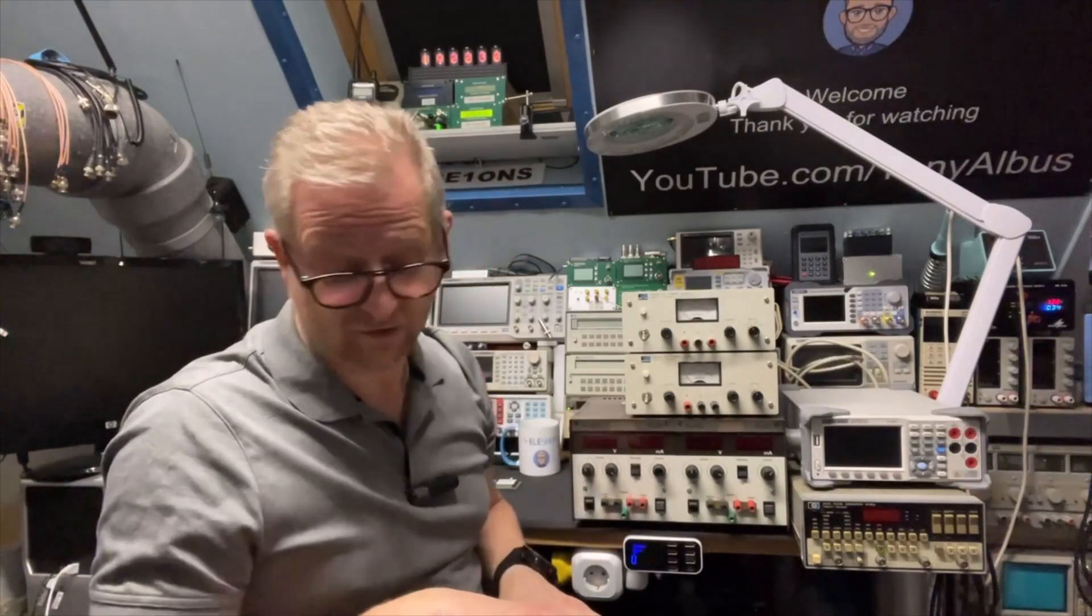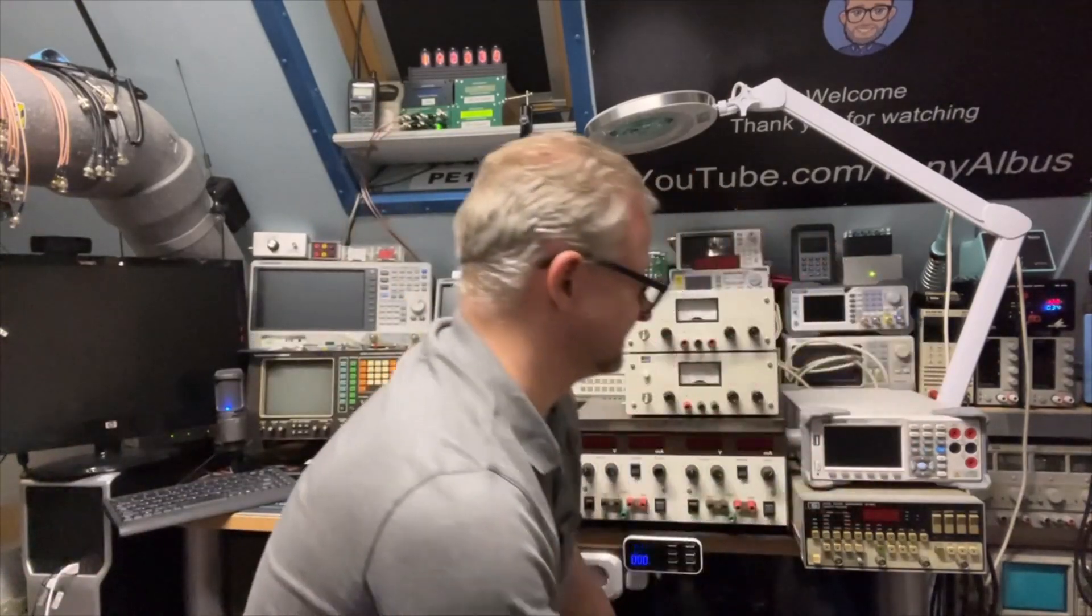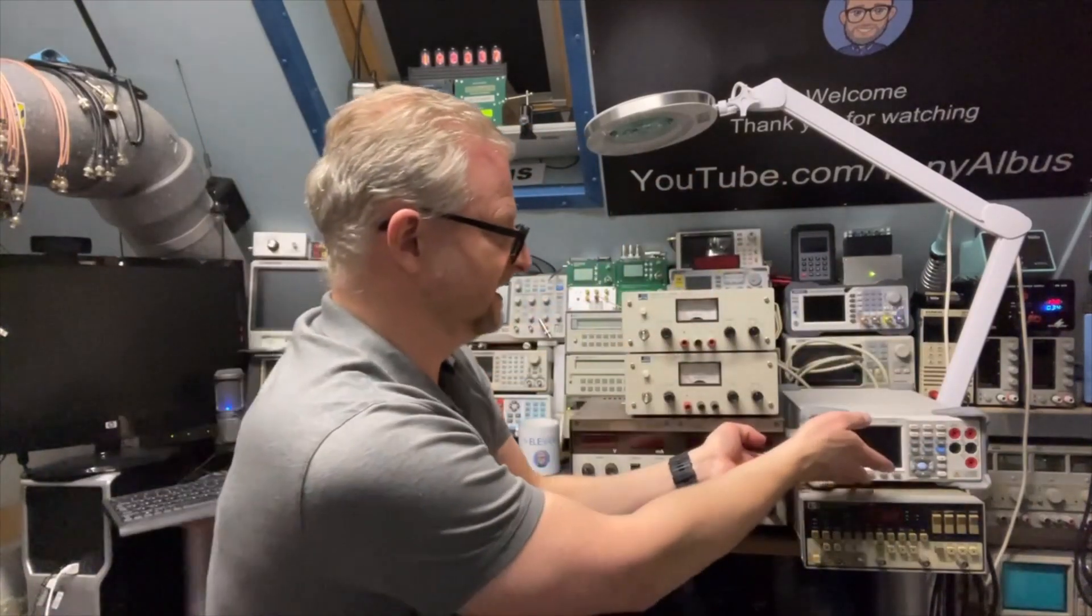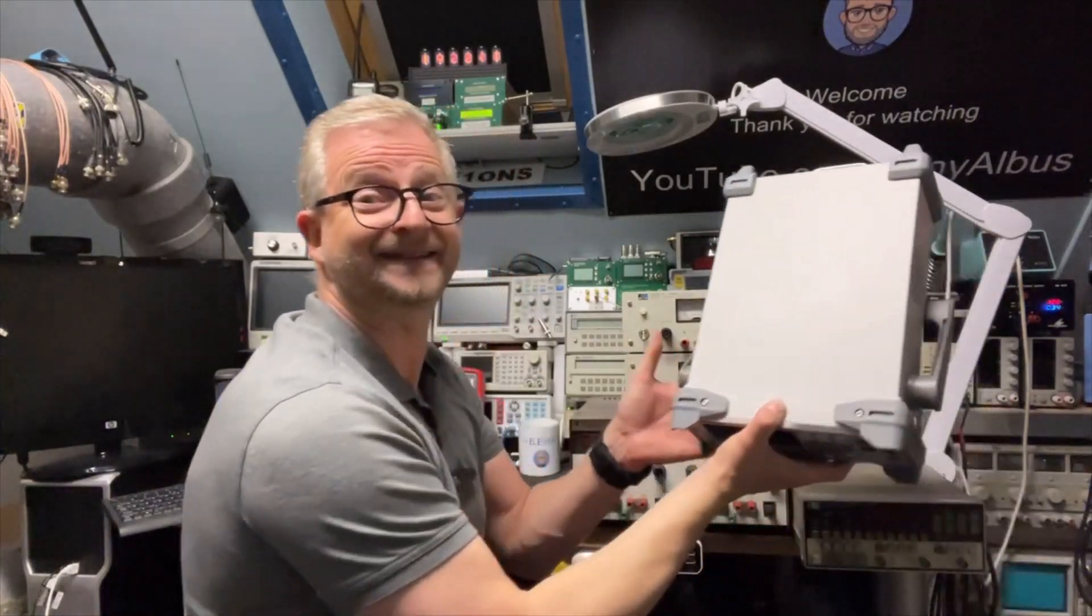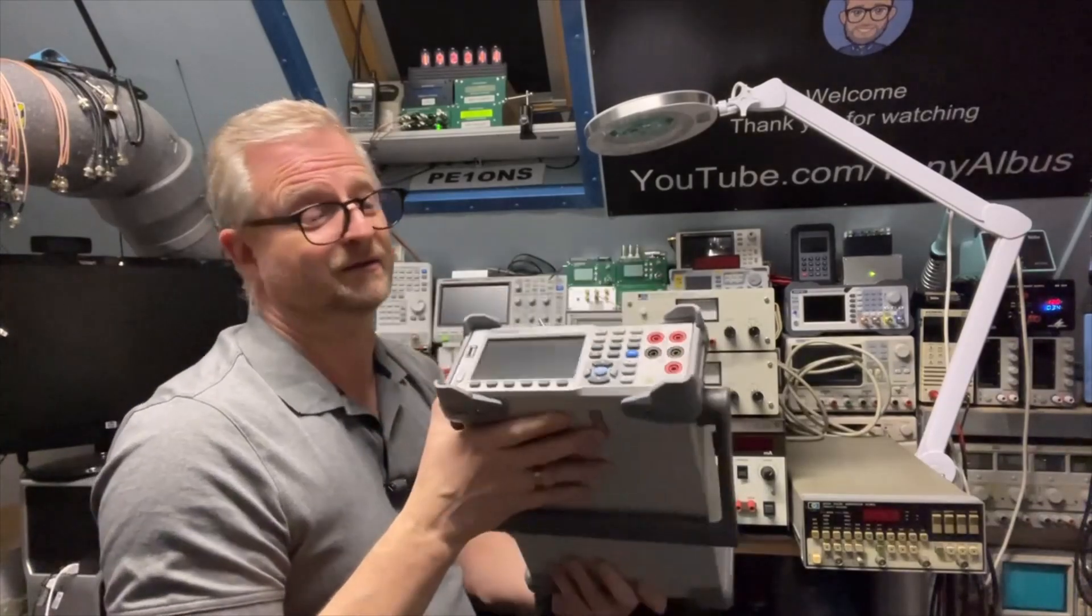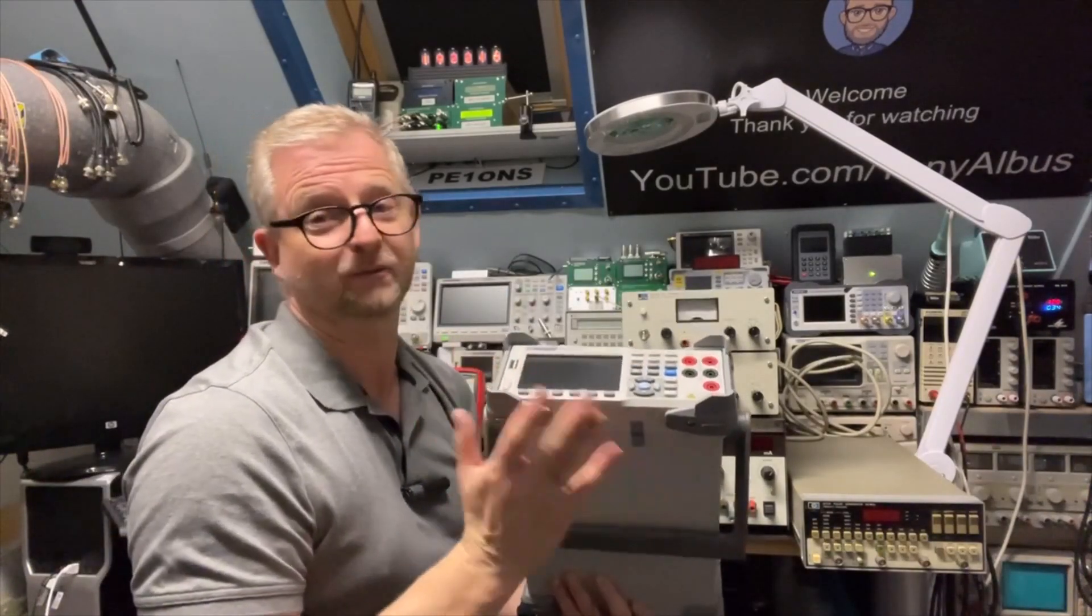So we're going to do a teardown and let's see how good the values are. And I've got the Siglent SDM 3065x, but it is an SC version so it has a scanner card and I still want to make some sort of breakout box.